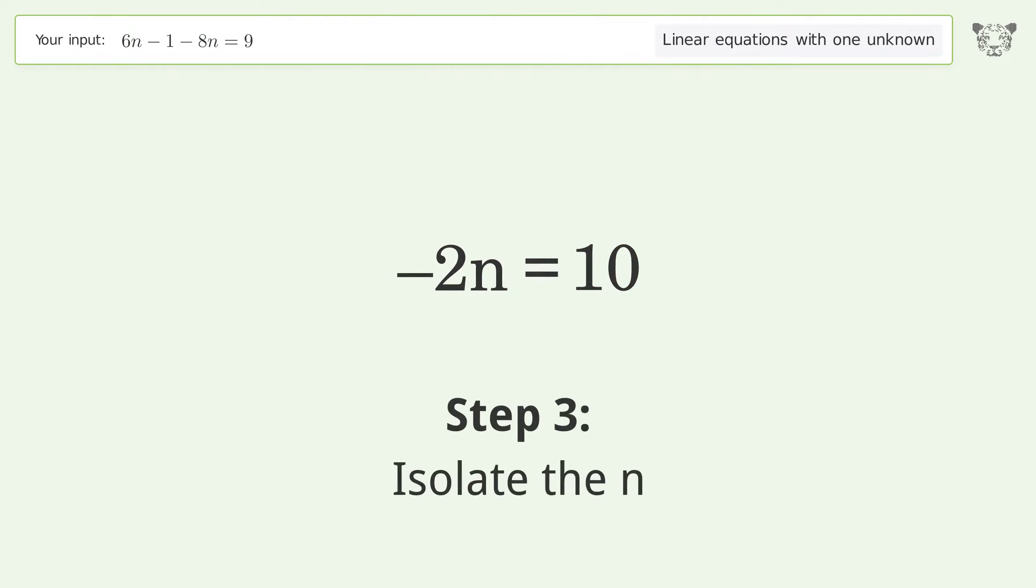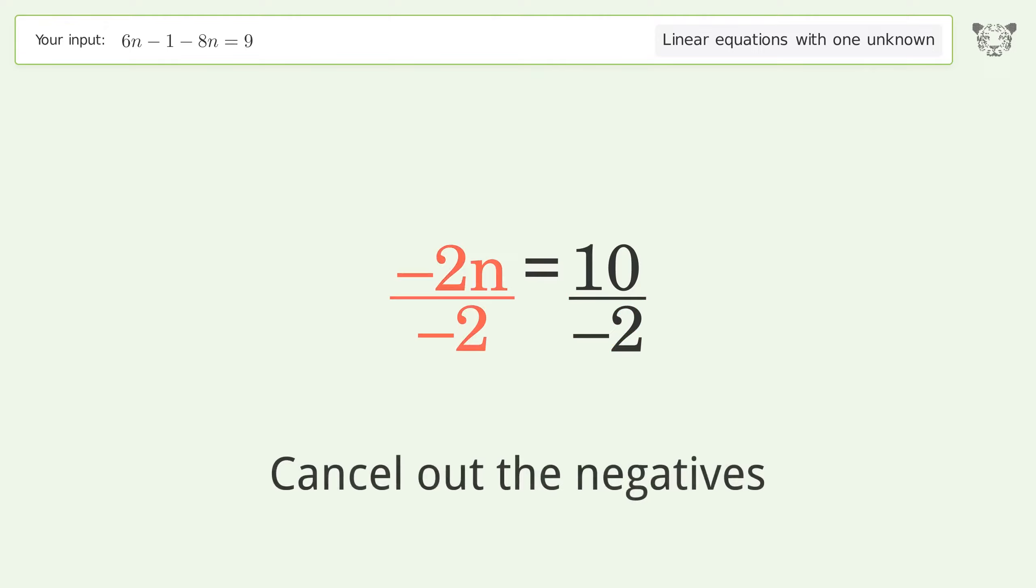Isolate the n. Divide both sides by negative 2. Cancel out the negatives.